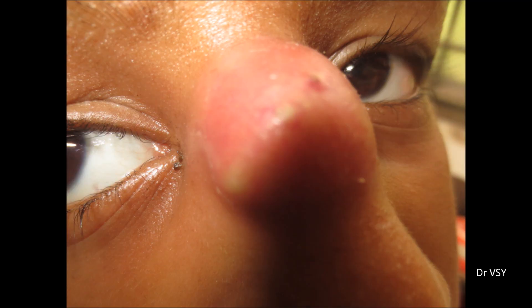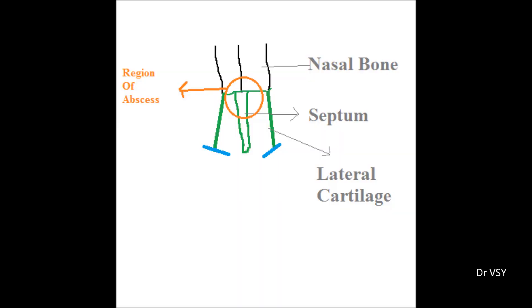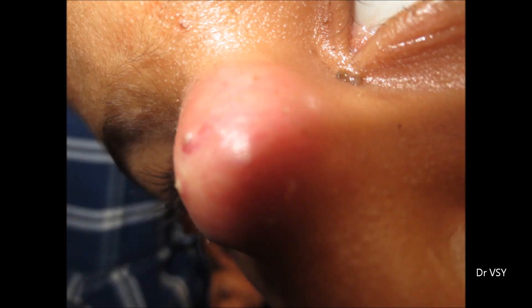Here we are going to show you the abscesses present near the eyes. This abscess is present on the nose — as you can see, it's quite big and about eight to nine days old. This is the position of the abscess on the nasal bone, covering the septum as well as the lateral cartilage, so it may damage all these parts — the lateral cartilage, the septum, etc. — if not timely treated.